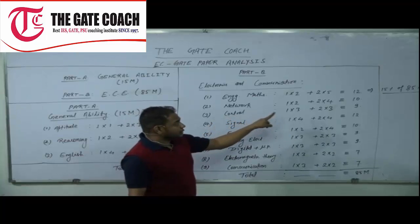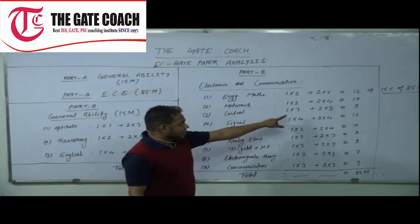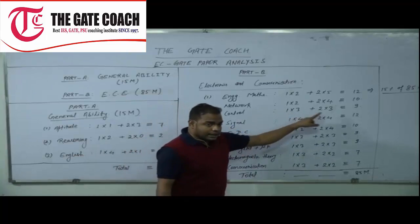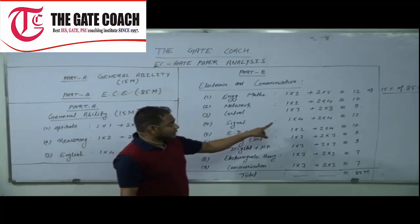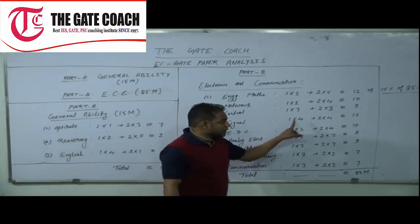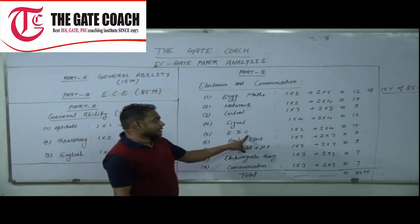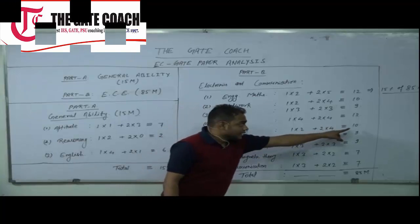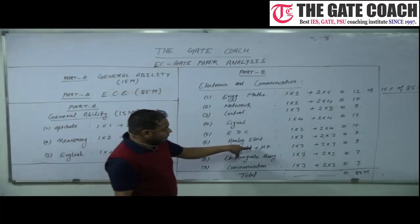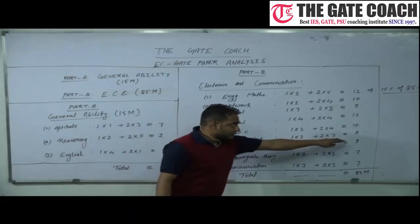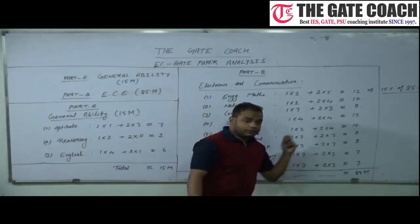Control system has around 9 marks — 3 one-mark questions and 3 two-mark questions. For signals and systems, it has 4 one-mark questions and 4 two-mark questions, totaling 12 marks. From electronic devices it is around 10 marks, and for analog electronics, 9 marks are being asked — 3 of 1 mark and 3 of 2 marks.